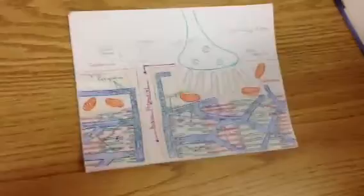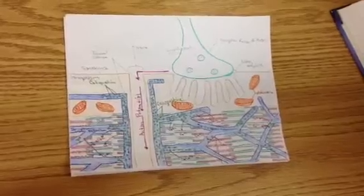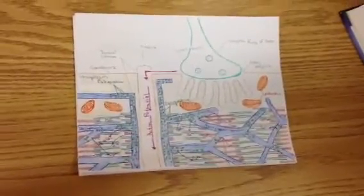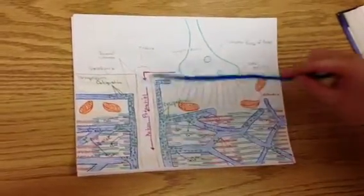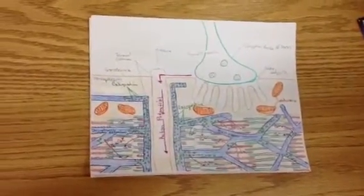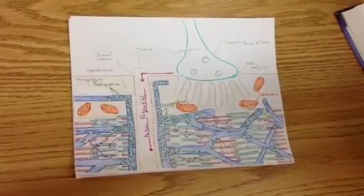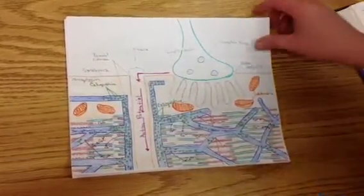Action potentials open voltage-regulated ion channels in the T tubules. These are physically linked to calcium channels in the terminal cisternae of the sarcoplasmic reticulum. The gates in the SR open as well, and the calcium diffuses out of the SR down its concentration gradient into the cytosol.